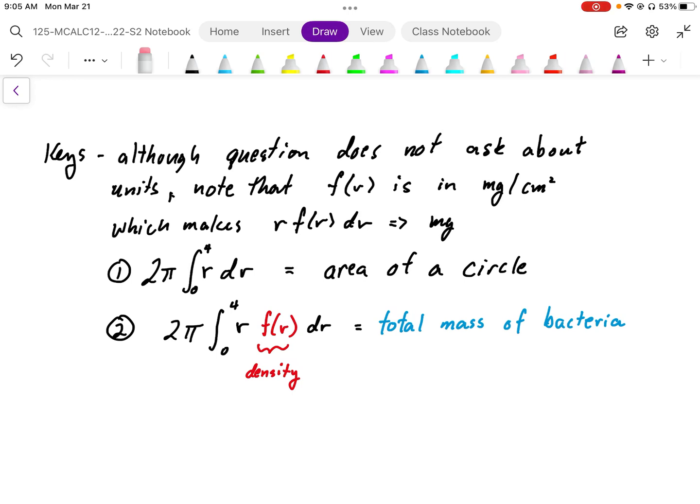First of all, 2π r dr, the integral of r dr times 2π, gives us the area of a circle. So that gives us the area units.